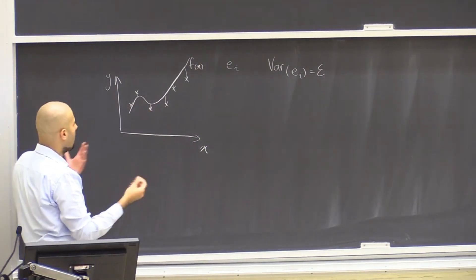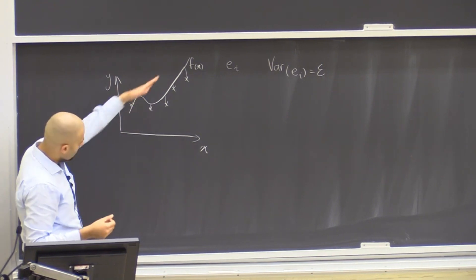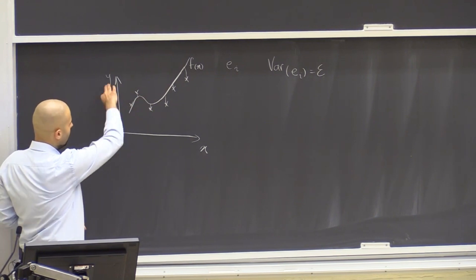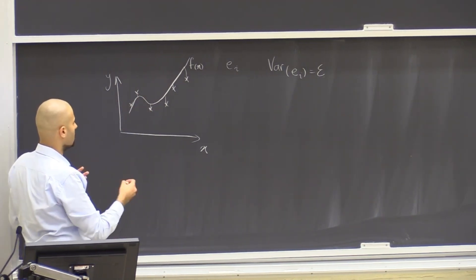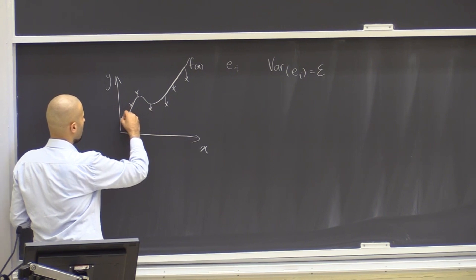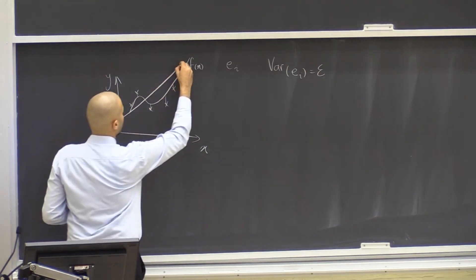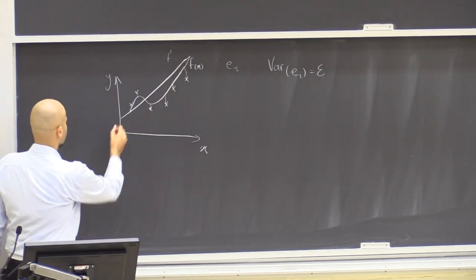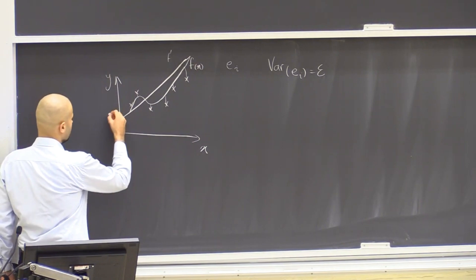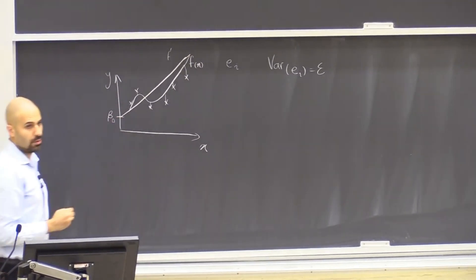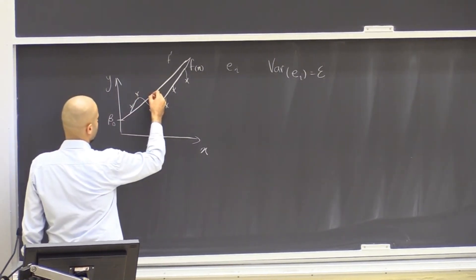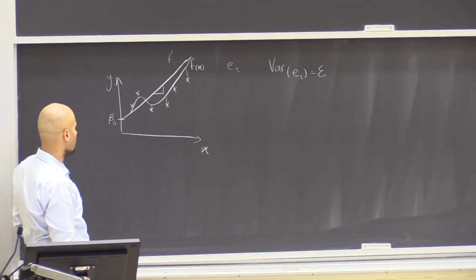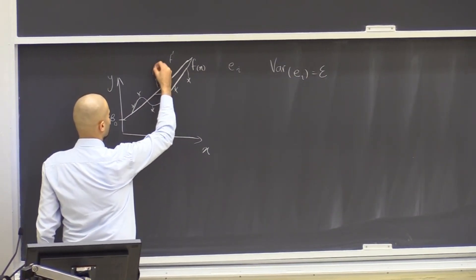Then we also talked about estimating this function. As we can see, these points are overall increasing — they are overall values of y increase with values of x. So a simple model for representing this relationship could be a line, which we call f prime, and it has some intercept and a slope. The intercept of this line is beta zero, and the slope is beta one, representing how fast or slow the line continues in the direction of x and y.